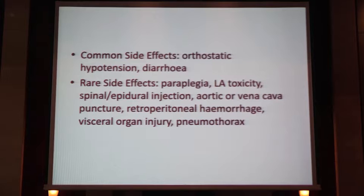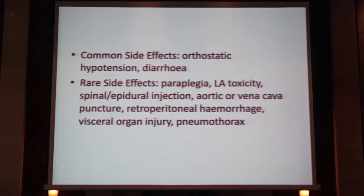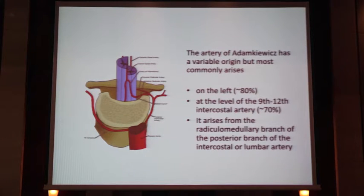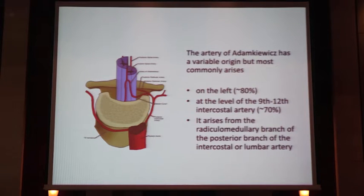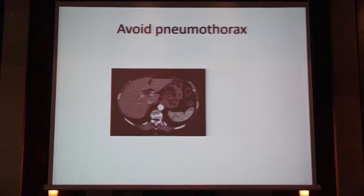Aortic or venous puncture can occur because it's not a real-time procedure and sometimes you may advance the needle accidentally; however, diagnosis is very apparent. Retroperitoneal hemorrhage can occur in some patients. Vital organ injury with a 20 or 22 gauge needle is not something we should be very worried about. Pneumothorax is a complication that is very much avoidable. The artery of Adamkiewicz arises from the radiculomedullary branch of the posterior branch of the lumbar artery. Usually we take the left-sided approach and you have to be very careful about how the dye is spreading. Just check your levels — if you can see a sliver of lung coming down, even if the patient is taking a deep breath or has advanced malignancy, avoid that level and go down below.